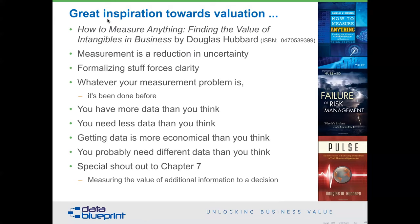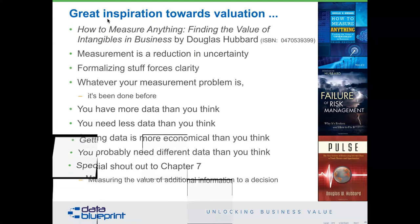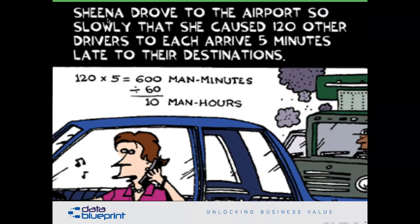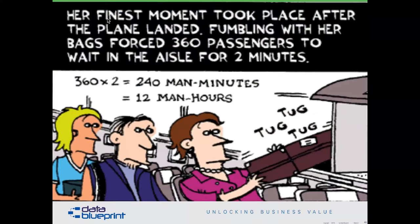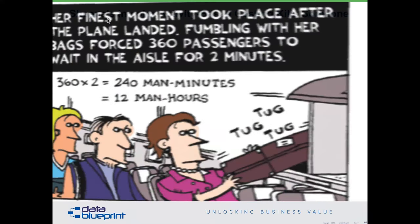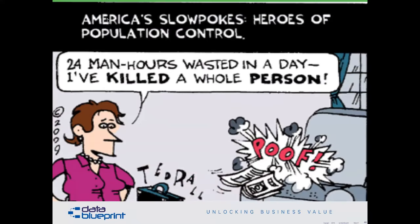I like this particular cartoon so much I bought the rights to it from the cartoonist. Sheena drove to the airport so slowly that she caused 120 other drivers to each arrive five minutes late. Then she got stuck at TSA by forgetting to take her laptop out of her bag. And then she's the person in first class who can't get her bag out of the overhead bin when everybody else is trying to make connections at Chicago O'Hare on a rainy Friday afternoon. The point is that you can add up all of these things — and in this particular instance, she's killed the equivalent of an entire person in a day.